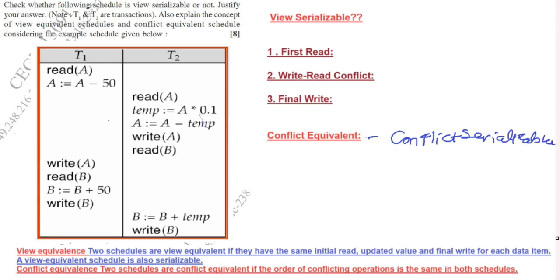To check conflict serializability, underline all the write operations. We have four write operations identified in the schedule. We have to check the write-read pairs between the two transactions.